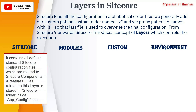The Sitecore layer contains all the default standard Sitecore configuration files related to Sitecore components and features. Files related to this layer are stored in the Sitecore folder inside the app_config folder. So the Sitecore layer contains all the default configuration files for Sitecore — Sitecore itself adds files into this layer.